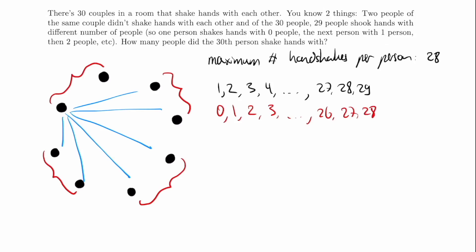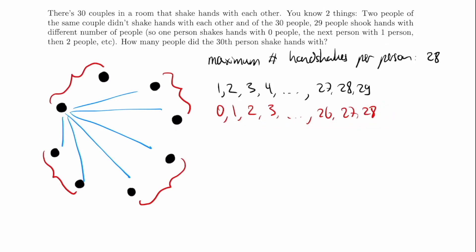You might say, well, how do we know it's an increasing sequence? Well, this numbering of people doesn't really matter — it's arbitrary. We can always just shuffle the people around and relabel them so that this is an increasing sequence. So the only thing we need to figure out is how many people did the 30th person shake hands with.